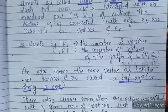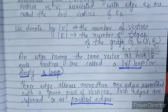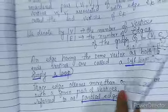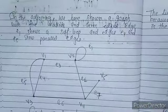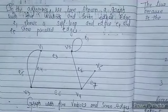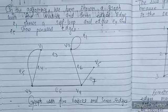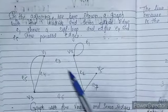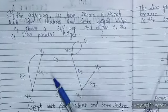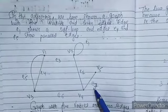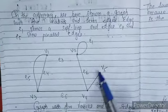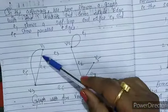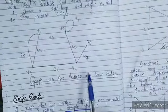An edge having the same vertex as both its end vertices is called a self-loop, or simply a loop. Those edges that allow more than one edge associated with a given pair of vertices are referred to as parallel edges. In the adjoining figure, we have shown a graph with 5 vertices — V1, V2, V3, V4, V5 — and 7 edges: E1, E2, E3, E4, E5, E6, and E7. This is our self-loop and this is our parallel edges.